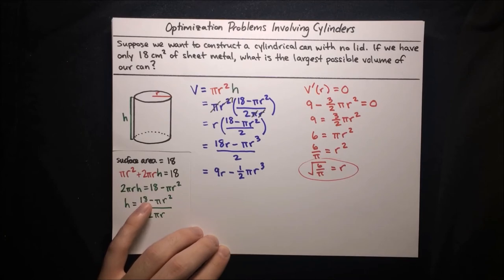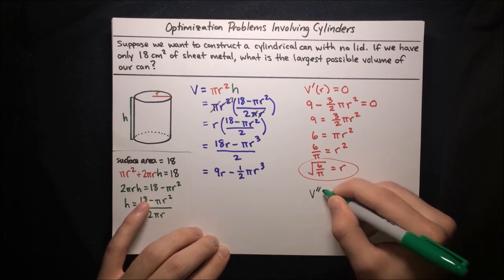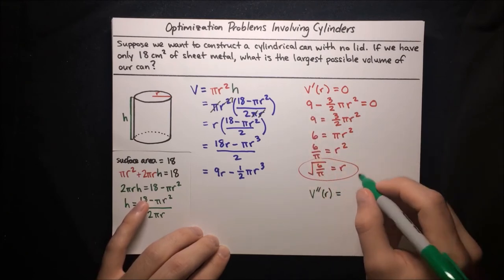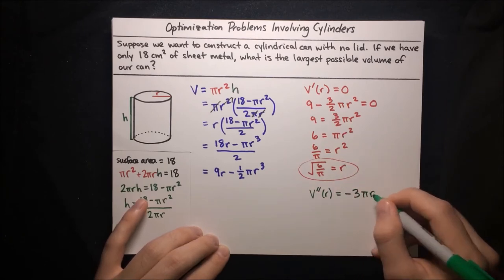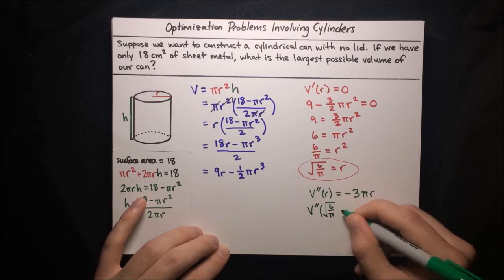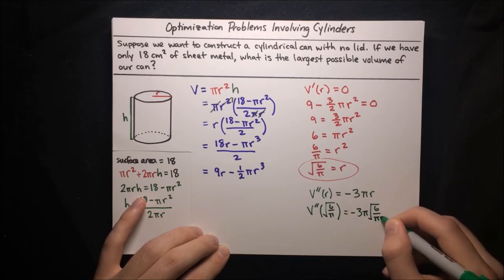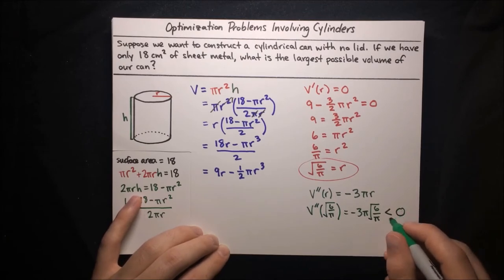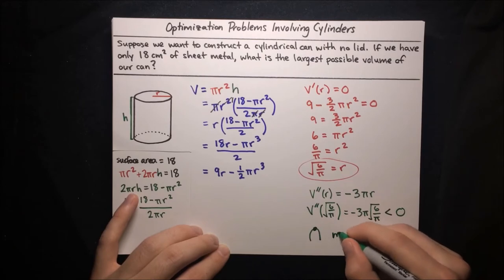Let's verify this is indeed a maximum using the second derivative test. Taking the second derivative V double-prime of r: the constant 9 goes away, and the power rule on negative three-halves pi r squared gives negative 3 pi r. Evaluating at r equals the square root of 6 over pi gives negative 3 pi times the square root of 6 over pi, which is negative. Since the second derivative is negative, the function is concave down there, confirming we are at a maximum.